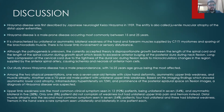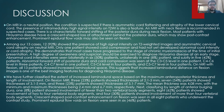Upper limb weakness was the most common clinical symptom, seen in around 92% of patients — unilateral in seven and asymmetric bilateral in five patients. Only one patient did not complain of weakness but had unilateral upper limb pain and tremors instead. Distal muscle atrophy was the second most common symptom in seven patients. On MRI in a neutral position, the condition is suspected with asymmetric cord flattening and atrophy of the lower cervical cord and intramedullary high signal intensity on T2-weighted images. MRI with neck flexion is recommended, showing characteristic forward shifting of the posterior dura with a crescent-shaped enhancing posterior epidural space and prominent epidural flow voids.